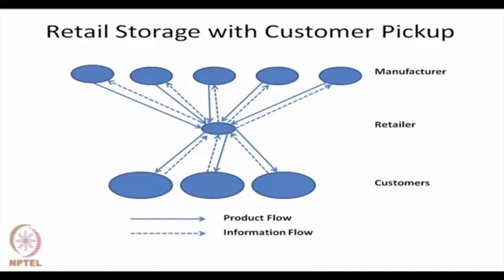The first option is retail storage with customer pickup. Here customers place their order with the retailer, the retailer has items collected from the manufacturer and supplies the product directly to the customers. The product flow is shown by the firm line and the order flow by the dotted line. The retailer then places orders with different manufacturers and gets the supply. So the retailer has storage and the customers pick up their desired goods from the retailer.